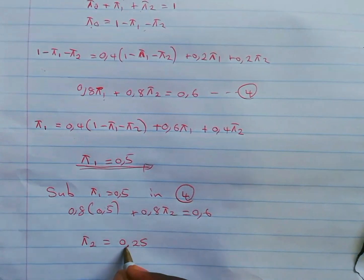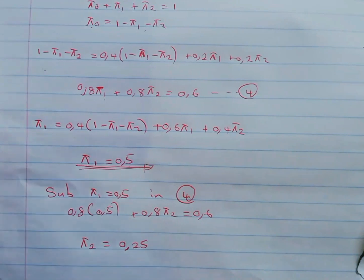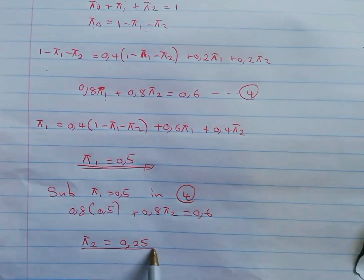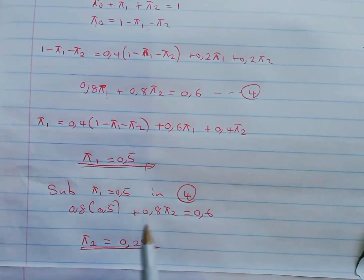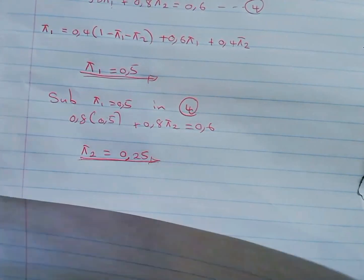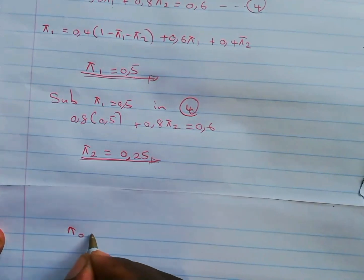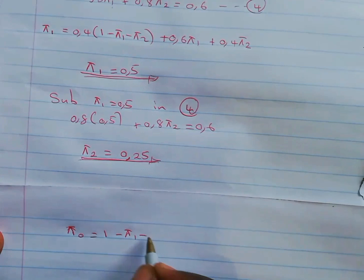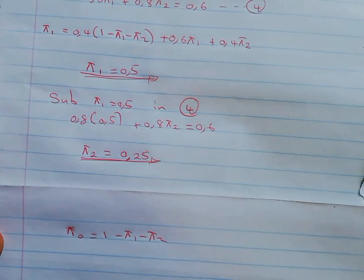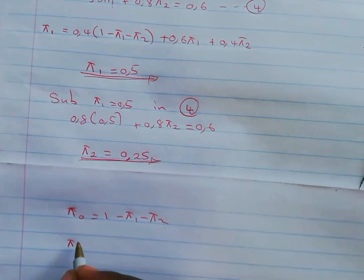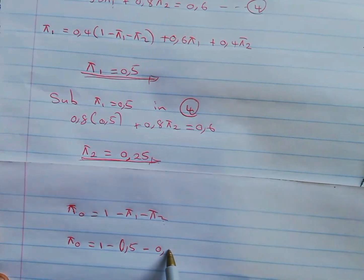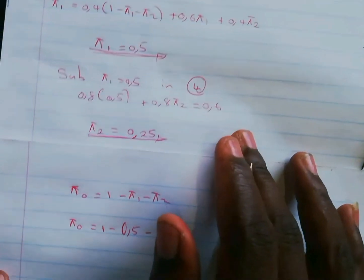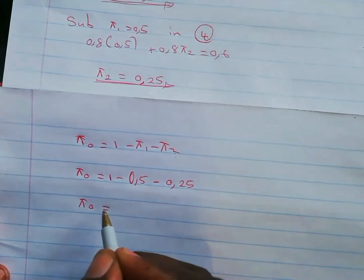Now we have the values of π₁ = 0.5 and π₂ = 0.25. To find π₀, we substitute these into the normalization equation: π₀ = 1 − 0.5 − 0.25, which gives π₀ = 0.25.